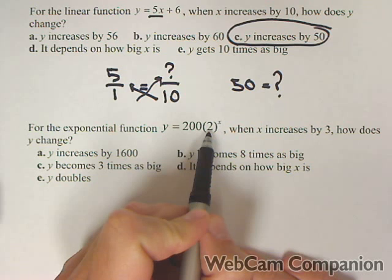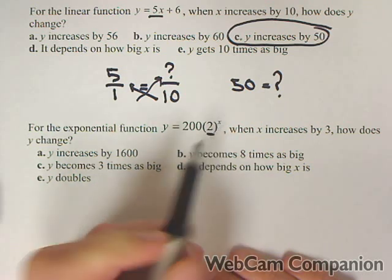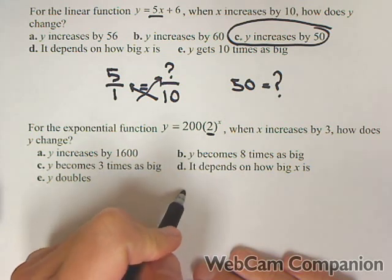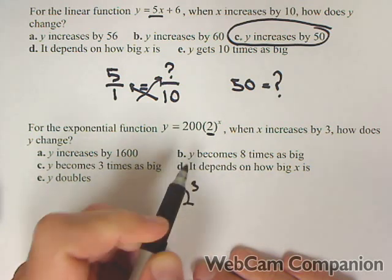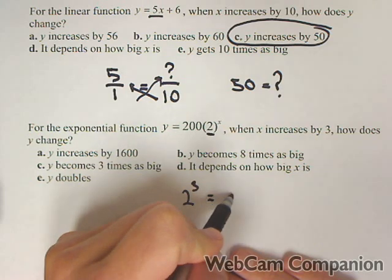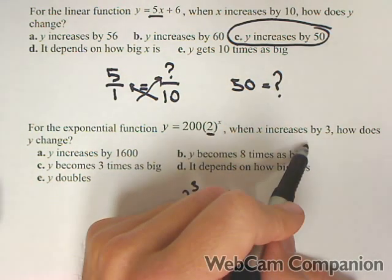Now it's not linear. Notice what's happening. It's doubling every time x goes up one. So what's gonna happen is y is gonna double three times. So it's gonna become eight times as big.